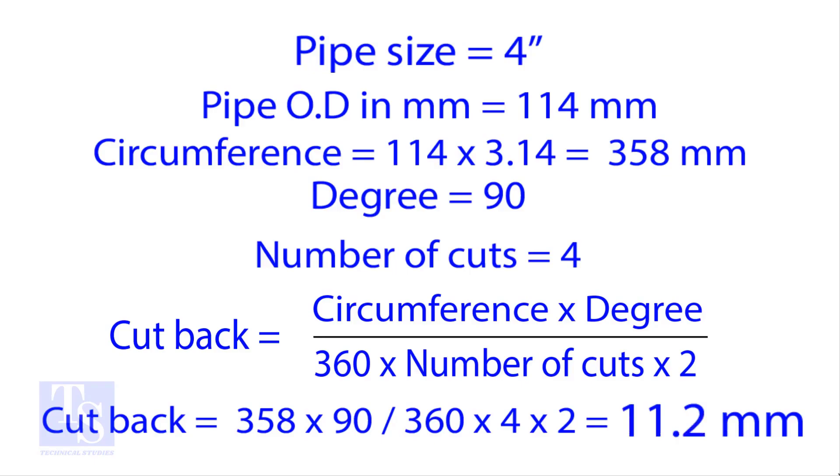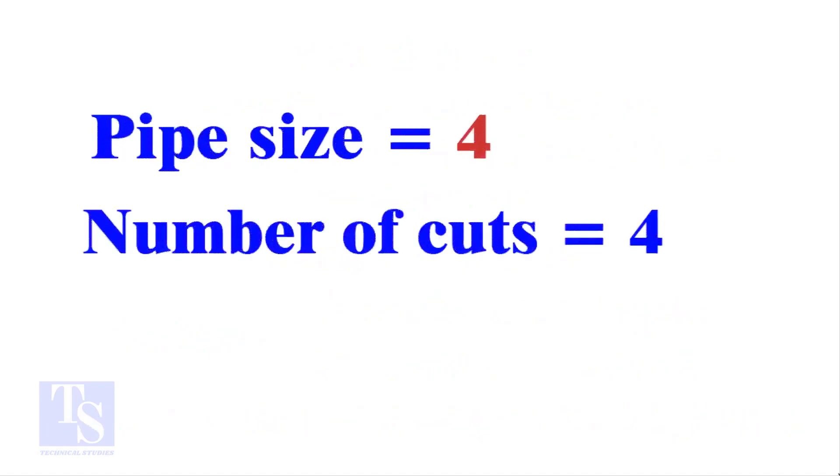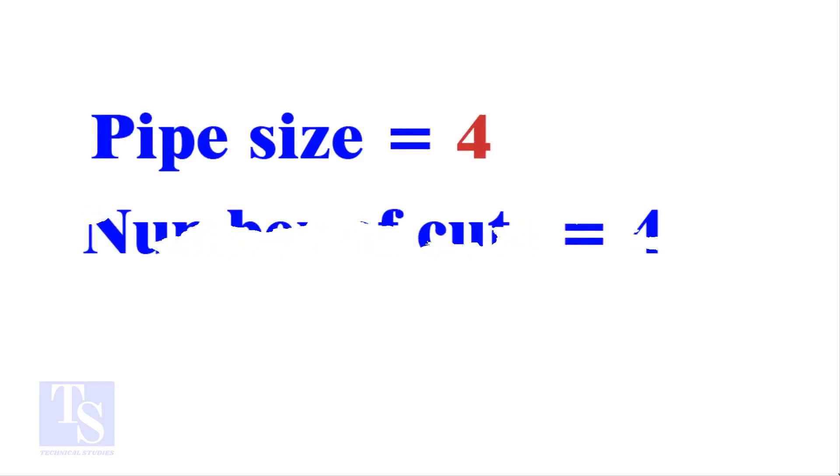Let us try the quick method. See the fast calculation method now. Let the pipe size be 4 inch and the number of cuts also be 4. Remember, you can use any number of cuts up to 9. Write down number of cuts 4 to the right side of the pipe size 4.